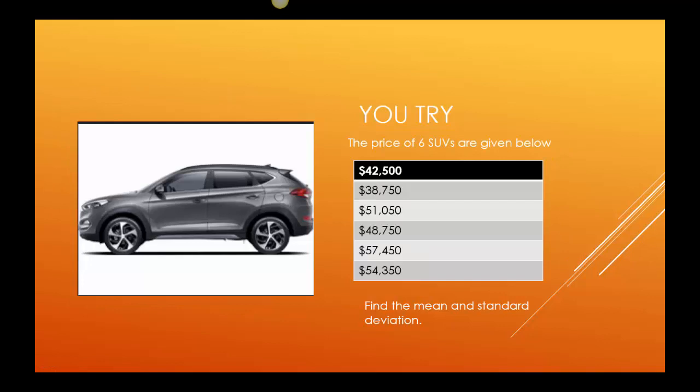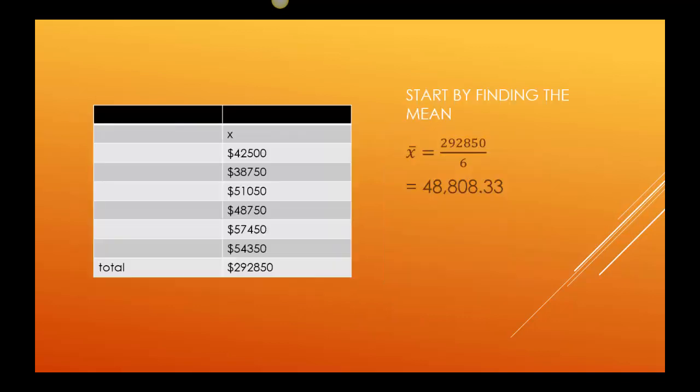So here's one for you to try. This is the price of six SUVs. They're given in this chart. I want you to find the mean and the standard deviation. Definitely stop the video. Make this chart for yourself. Find the mean. Then do the value of the car minus the mean. Square it. Add it together. Do six minus one is five. So divide by five. Take the square root. That will give you standard deviation. And then come back.